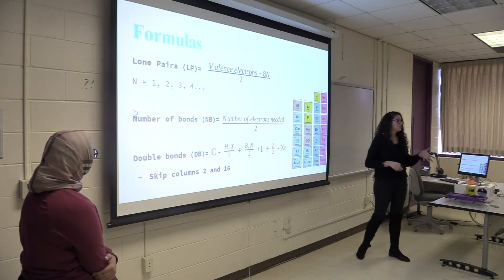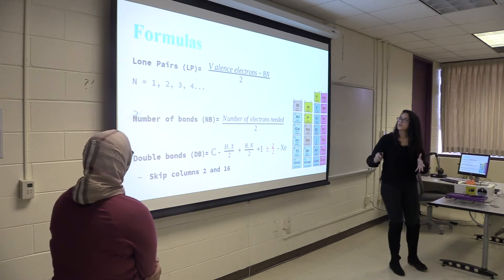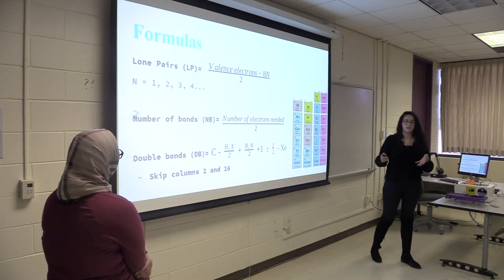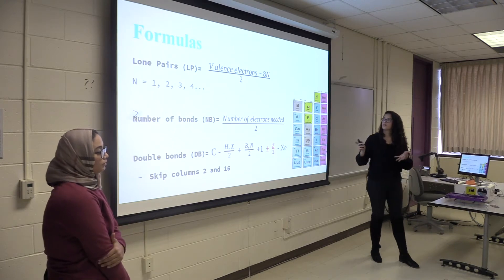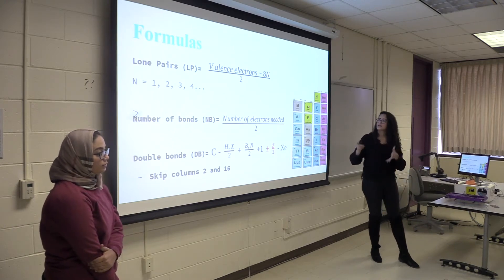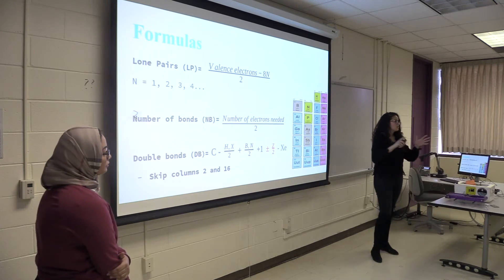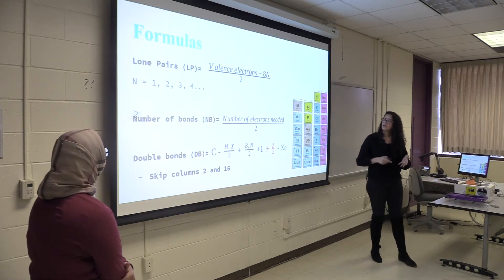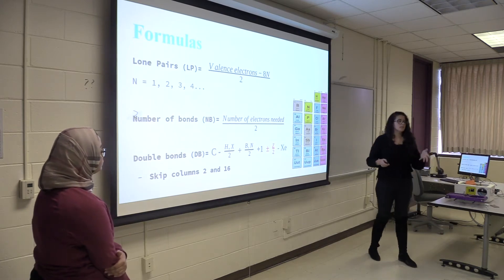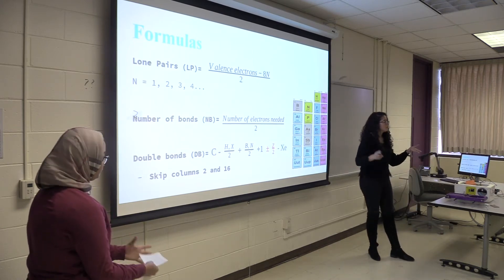So the formulas that you use to solve this, the first one is the lone pairs formula. To calculate this you have to subtract the valence electrons from the multiple of eight and divide by two. The valence electrons are the electrons in the outermost shell of the atom. And the second formula is the number of bonds and you do this by dividing the number of electrons needed by two.